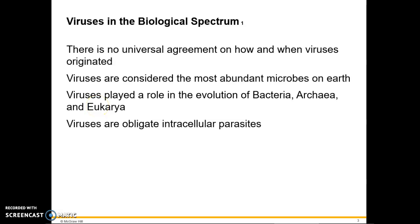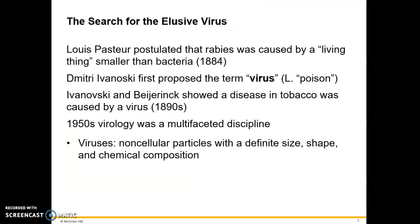Even though the light microscope was developed in the late 1600s and we were able to look at other types of cells, viruses are so small that it wasn't until the invention of the electron microscope that viruses could actually be viewed. At one time, viruses like polio, smallpox, rabies, and viruses that infect plant crops and animals in agriculture were known to be caused by something that could be transmitted from one organism to another.